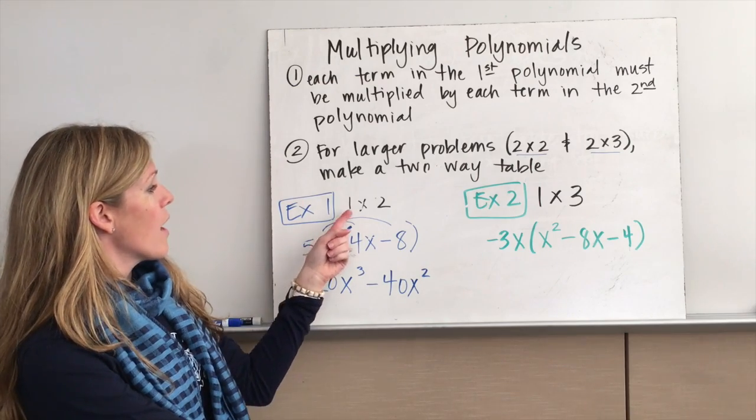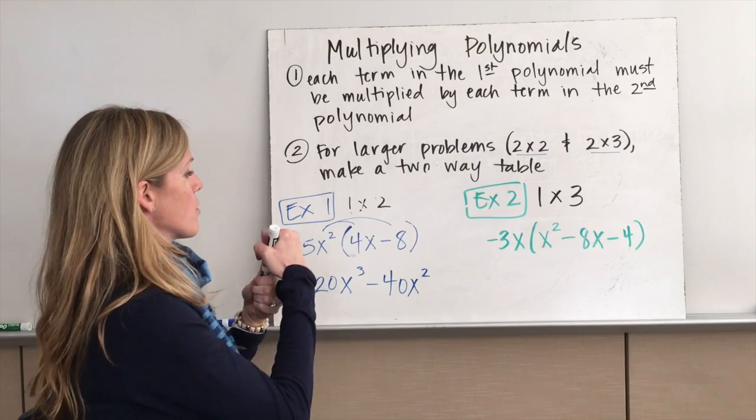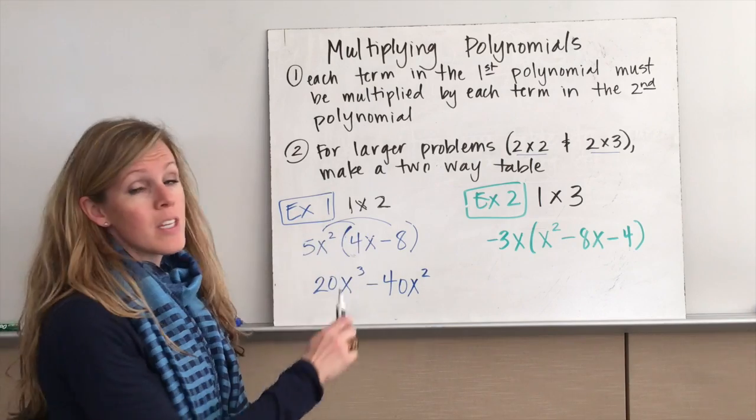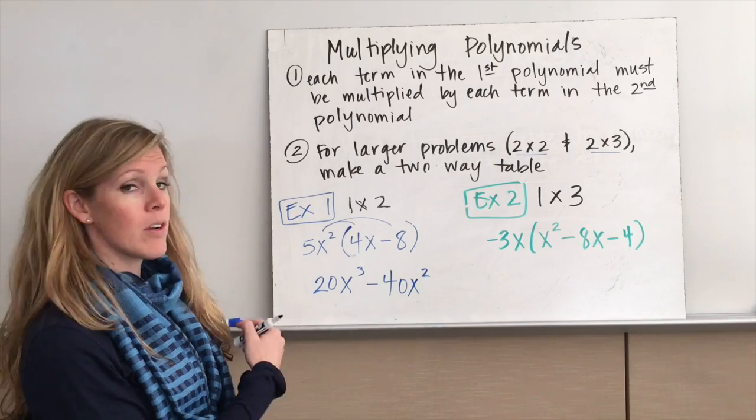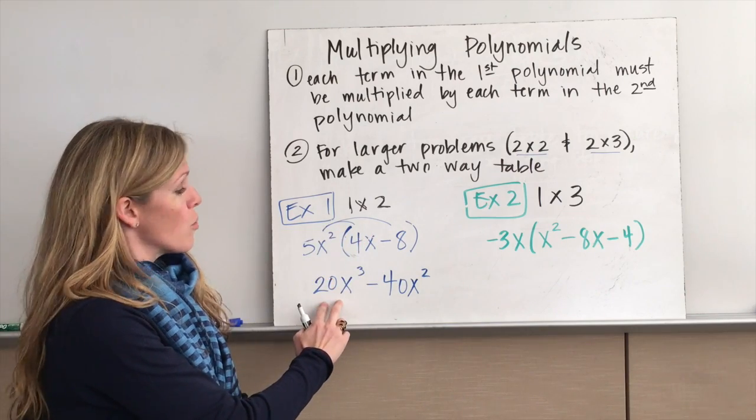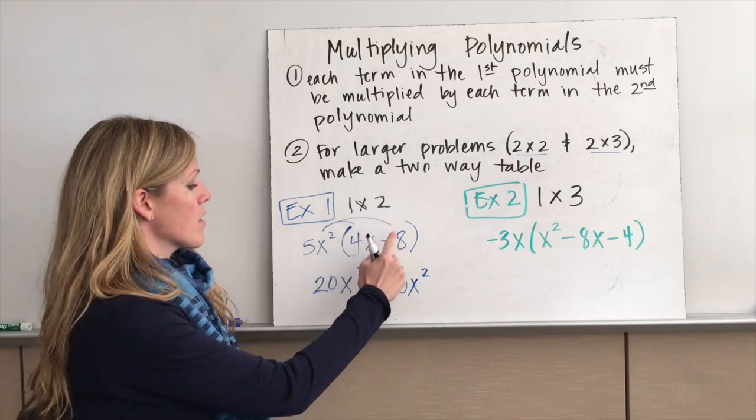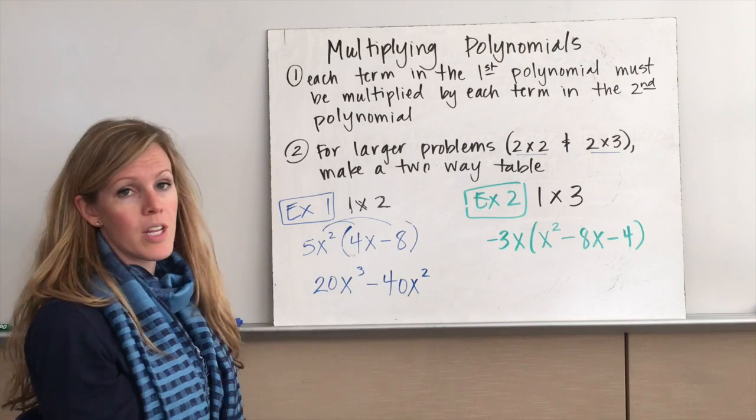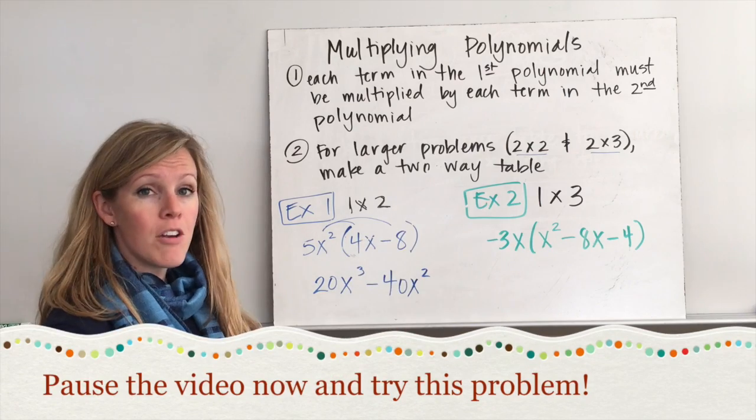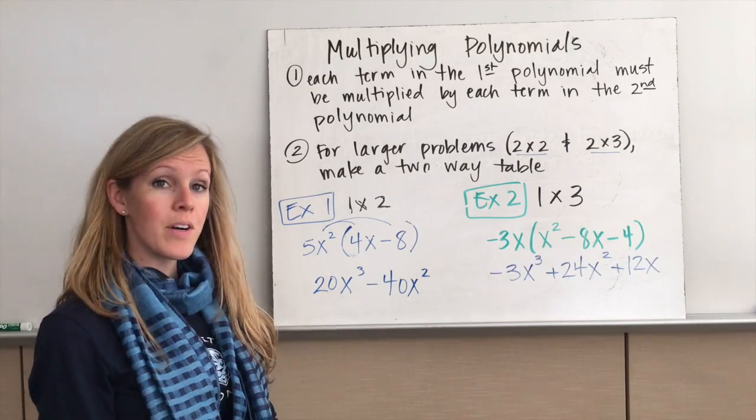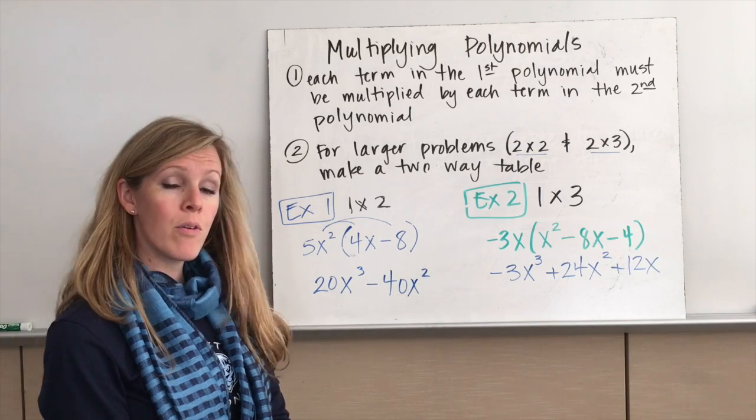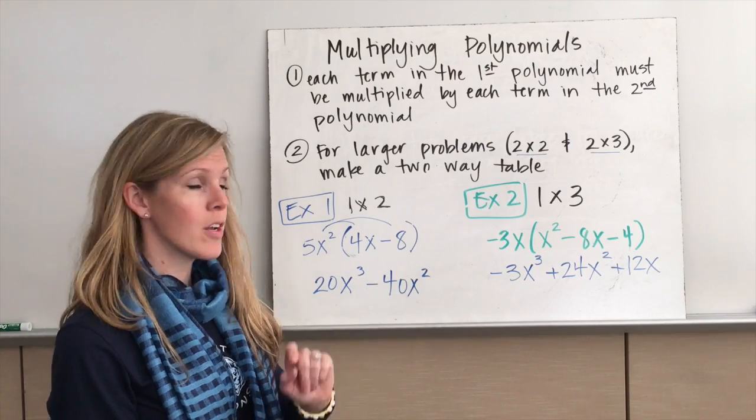So the simplest ones are where we have a 1 by 2 in this first example. A monomial times a binomial. This is simply distributing, right? And this should look fairly familiar. So 5x² times 4x gives us 20x³, and then 5x² times -8 gives us -40x². Pause the video now and try this second problem on your own. All right, welcome back. Hopefully you got -3x³ + 24x² + 12x when you distributed that monomial.